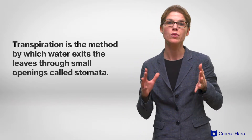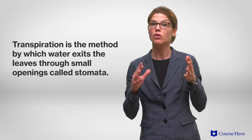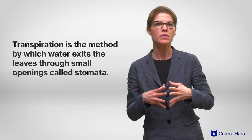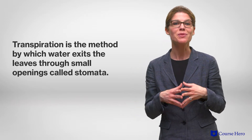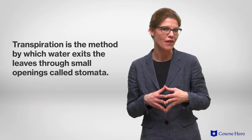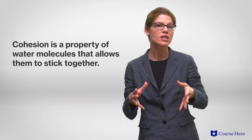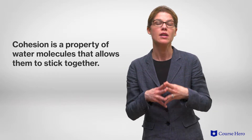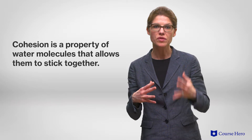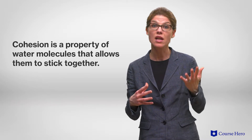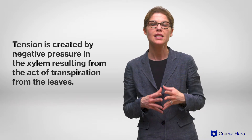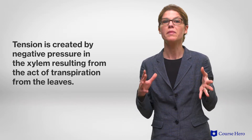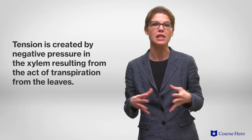Transpiration is a method by which water exits leaves through small openings called stomata. It evaporates from the leaves because of temperature, humidity, and other environmental factors. Cohesion is a property of water molecules that allows them to stick together. As one water molecule moves up through the xylem, it pulls another one along with it. Tension is created by negative pressure in the xylem, resulting from the act of transpiration from the leaves.